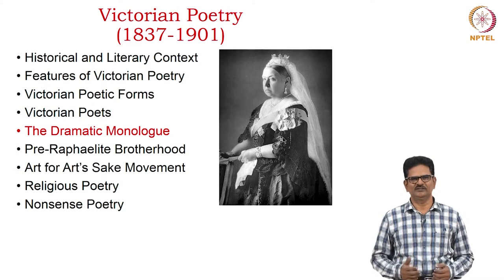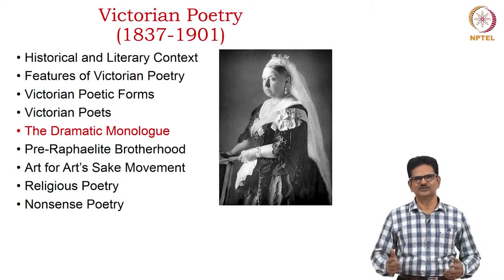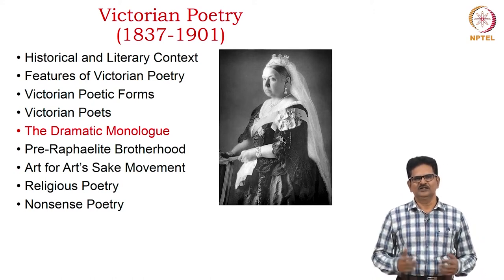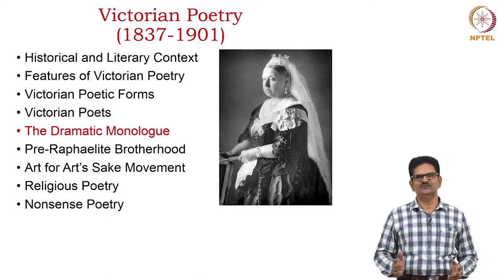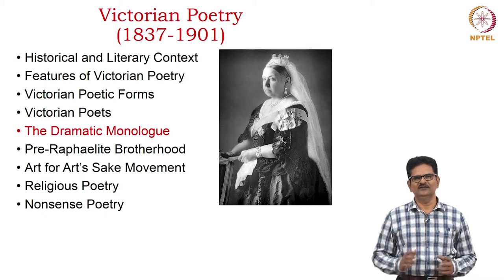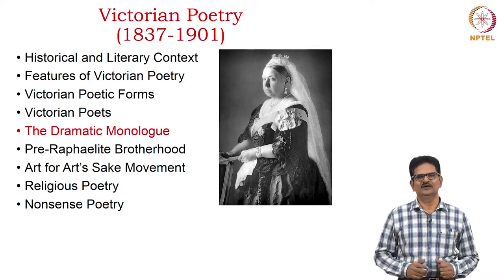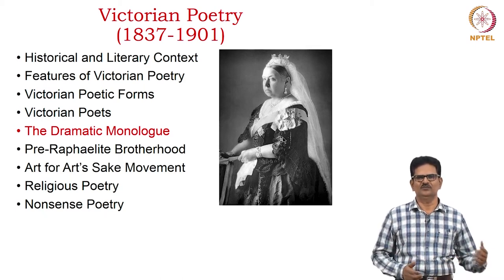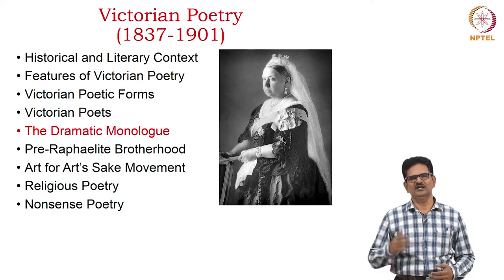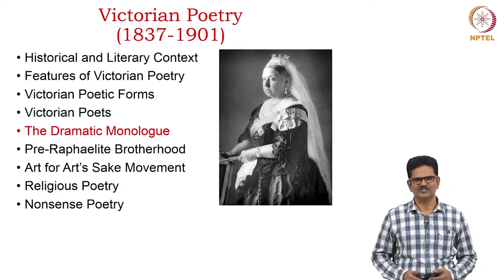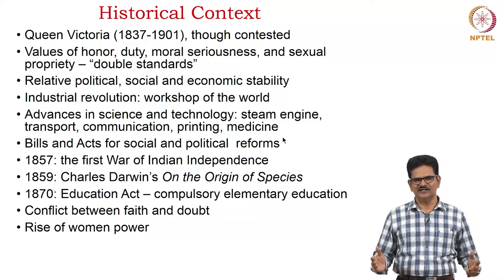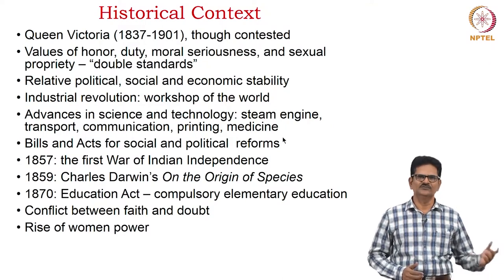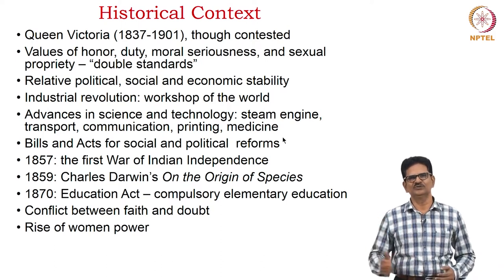We will continue with the Pre-Raphaelite Brotherhood movement during this Victorian period, discuss the Art for Art's Sake movement, and two more interesting features of Victorian Poetry: religious poetry and nonsense poetry. The historical context is closely linked with the period of Queen Victoria from 1837 to 1901.